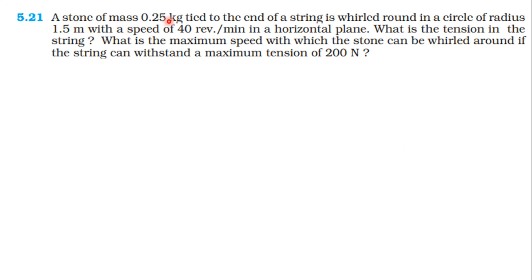A stone of mass 0.25 kg tied to the end of a string is whirled round in a circle of radius 1.5 meters with a speed of 40 revolutions per minute in a horizontal plane. What is the tension in the string? What is the maximum speed with which the stone can be whirled if the string can withstand a maximum tension of 200 newtons?